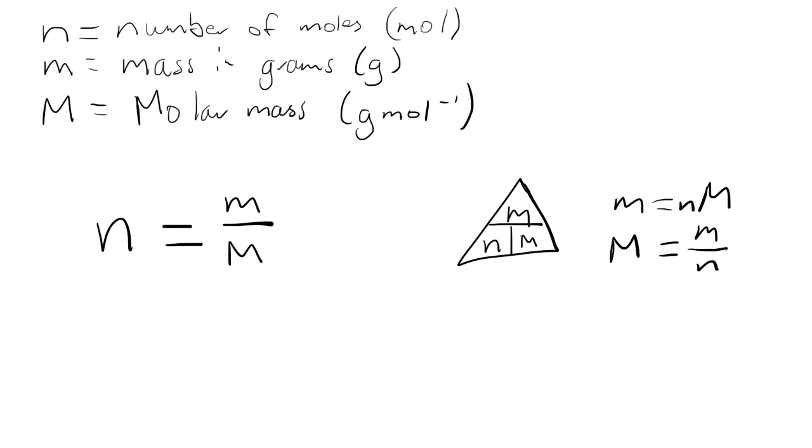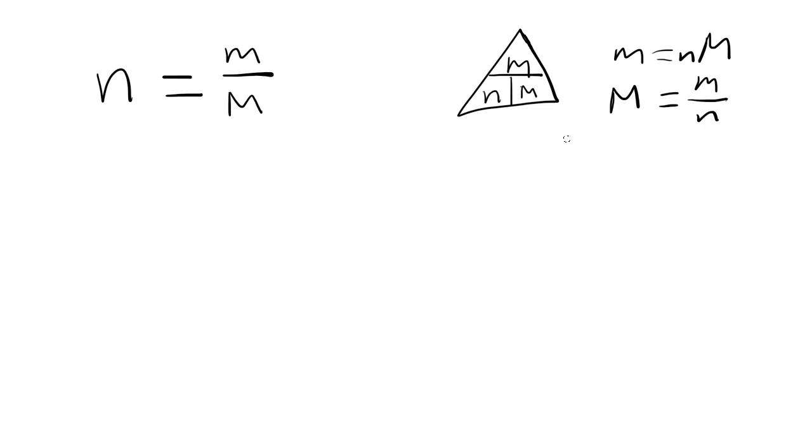So I'm going to look at first is how do we calculate the amount of moles of a substance if we know its mass. We want to know the number of moles and we have the mass, so the example we're going to look at is we're going to calculate the number of moles of copper sulphate in 20 grams of solid.